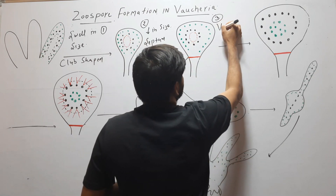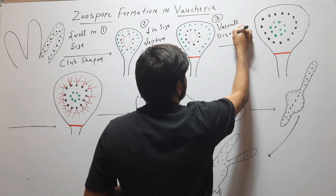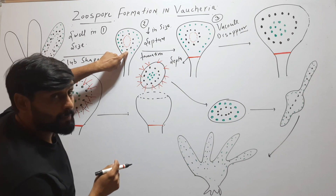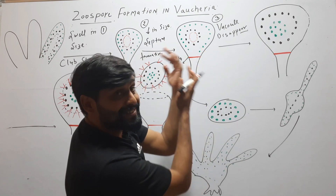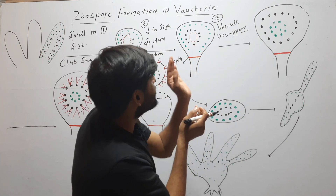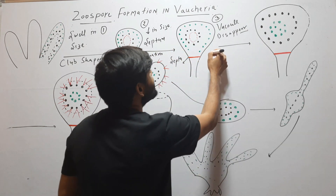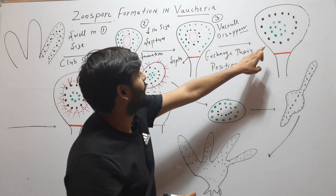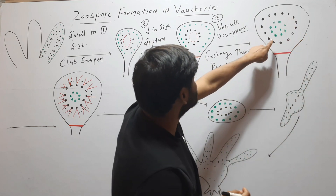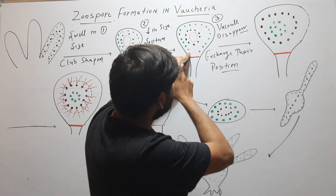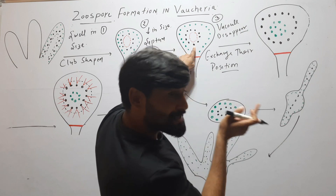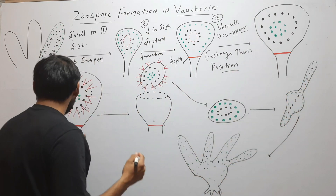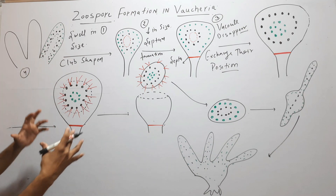In the third step, the vacuole will disappear. The green colored bodies are chromatophores and the dark colored bodies are nuclei. The nucleus is present inside and chromatophores are present outside. They will exchange their positions — chromatophores move to the inner side and nuclei move to the outer side. This exchange of position is the third step.